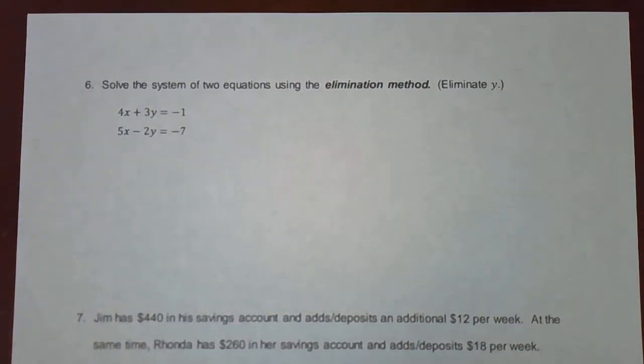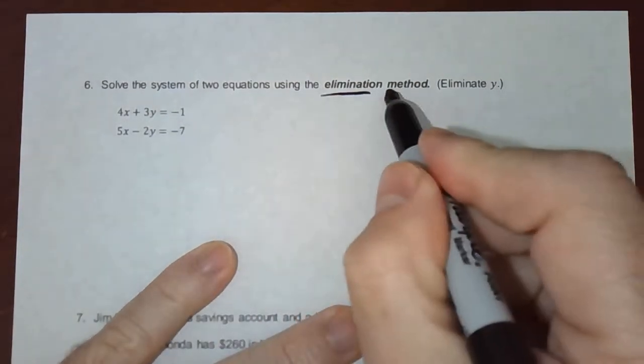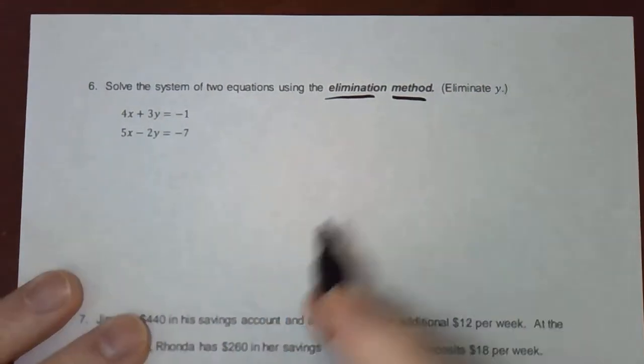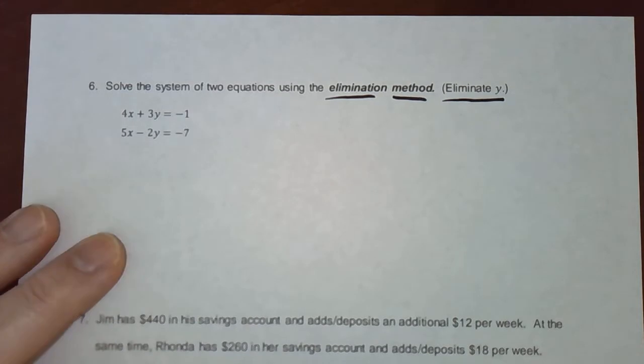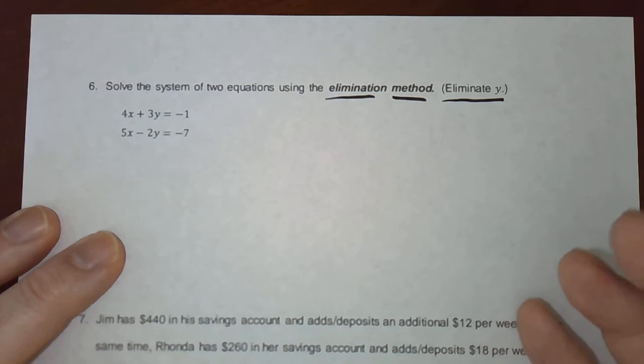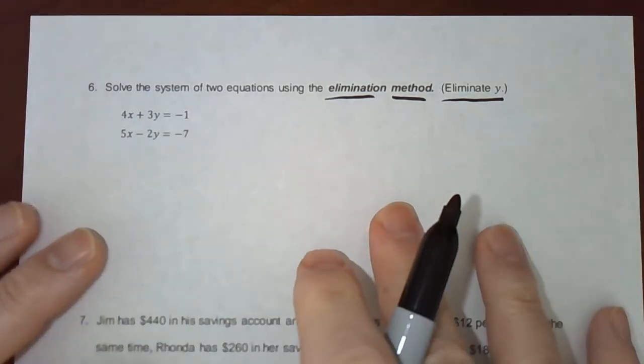Okay, we have two more examples to do using the elimination method. The first one says we're going to eliminate y. Now normally in your homework it's not going to say whether you should eliminate x or y. You'll be able to choose whichever one looks easier for you. But in this case we'll eliminate y.